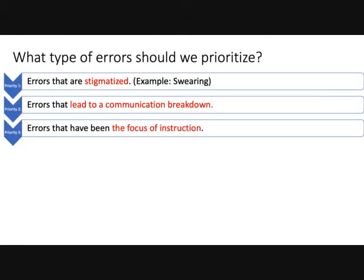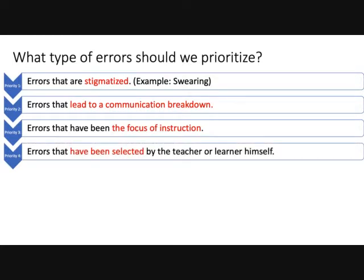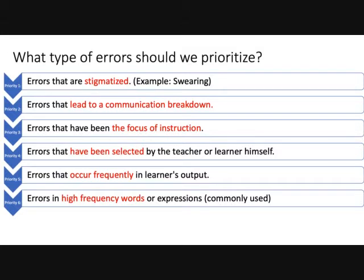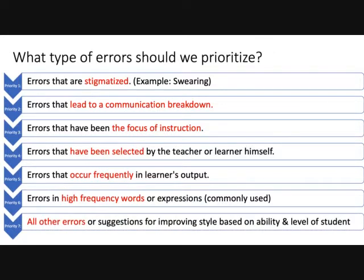They should have acquired this — they should have got it. The next priority is errors that have been selected by the teacher or learner themselves, especially when you get them involved in setting their own goals for language learning. Errors that occur frequently, because this is the highest return on investment: if you correct one error and they're making the same mistake ten times in a text, you've corrected ten mistakes with one correction. Errors in high-frequency words or expressions — things they'll probably use over and over again, useful words and expressions.